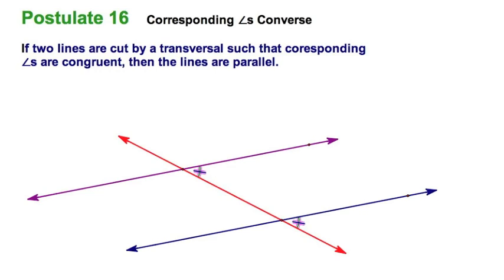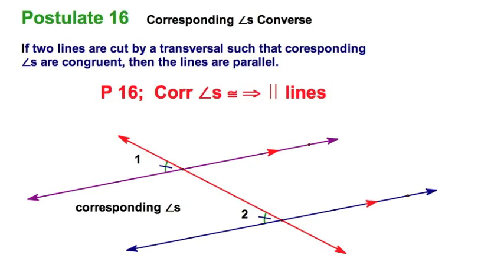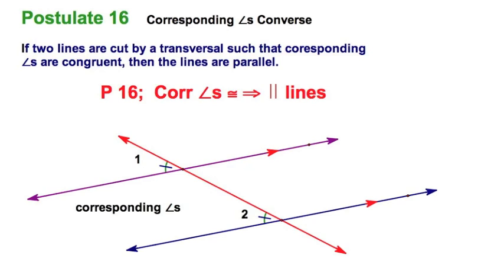This is the converse — Postulate 16. We need to use a separate postulate in this case. If two lines are cut by a transversal in such a way that these two corresponding angles are congruent, then I can conclude that the lines are parallel. That's the reverse, or as we say, the converse. Most of you are going to use the shorthand.